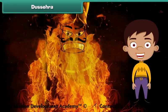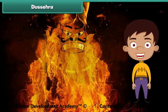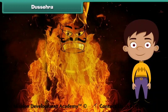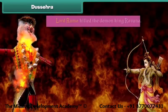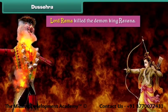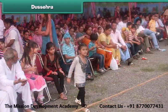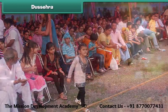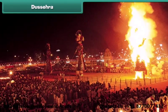Dussehra is another Hindu festival that marks the victory of good over evil. It is believed that on this day, Lord Ram killed the demon king Ravan. People gather in a large field in the evening and burn effigies of Ravan, his brother Kumbhakaran, and his son Meghanath.